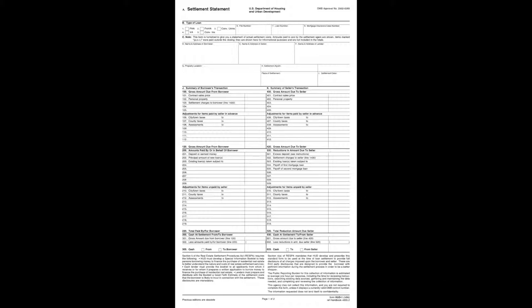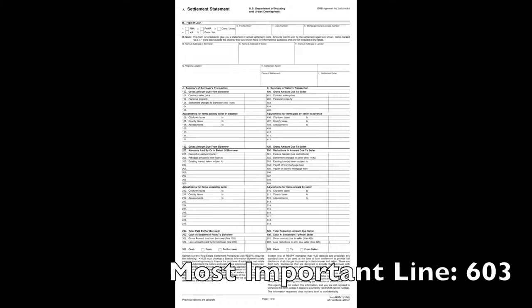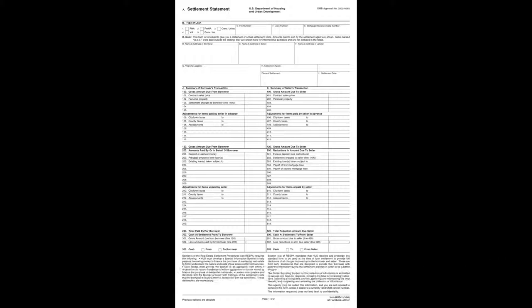Then we'll take those final numbers to show you what your cash to close — or the cash that we will need for closing — is. The most important number people are looking at on their HUD is how much they're netting. They're going to look at line 603. Pay attention because it'll say 'cash to' or 'from,' with a check mark indicating what we will need or what you will be receiving. It's very important that you see the check box — whether it's from or to you as the seller.